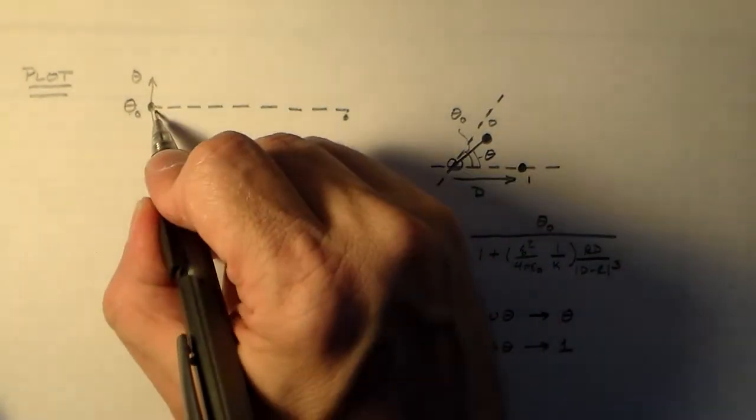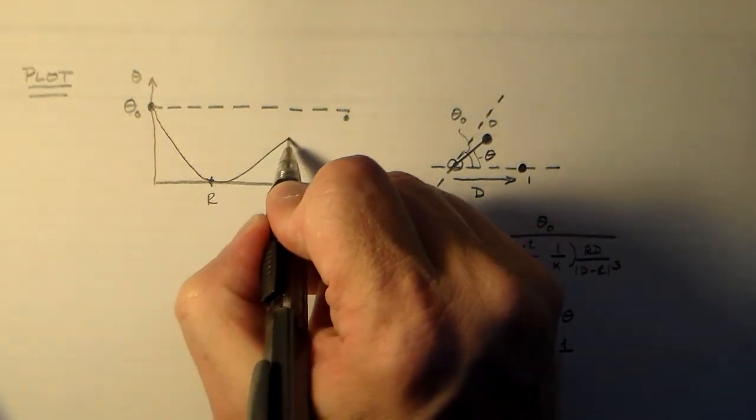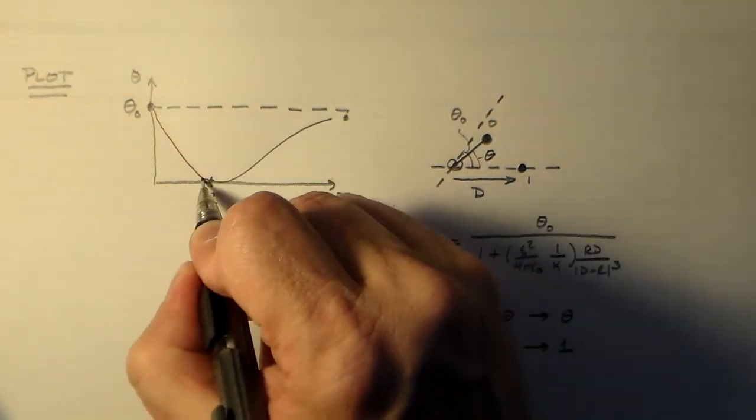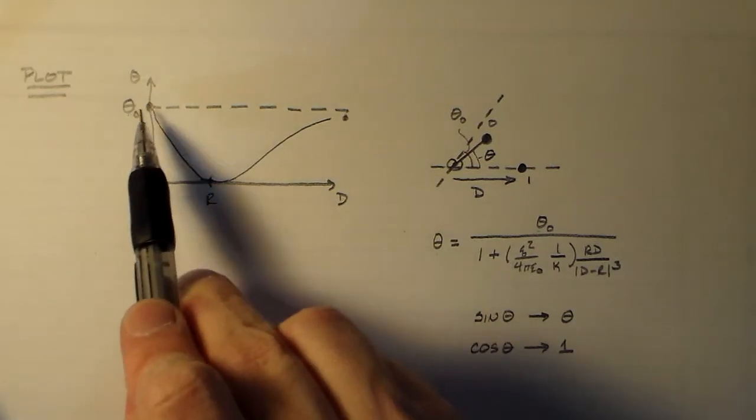And so that means we get something that looks very much like this. I should have drawn it and then marked r. That's a sneaky way to do it. So this is what we have here.